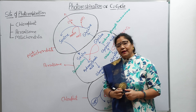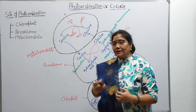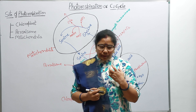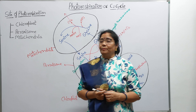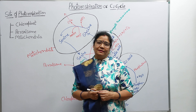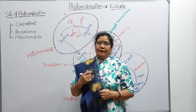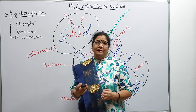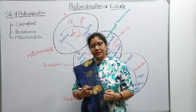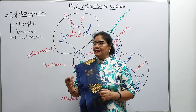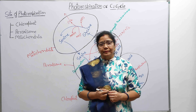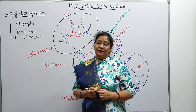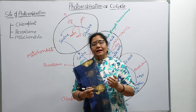Duniya ke jitne bhi paude hain, voh carbon dioxide ka fixation carbohydrate ke roop mein karte hain. Adhiktar paude dark reaction karte hain — C3 cycle karte hain. Hum jante hain photosynthesis do steps mein puri hoti hai: first step light-dependent hoti hai, jis mein ATP ka formation, oxygen ka evolution, aur assimilatory power ka generation hota hai. Doosri step dark reaction — jise Calvin cycle ya C3 cycle kehte hain.